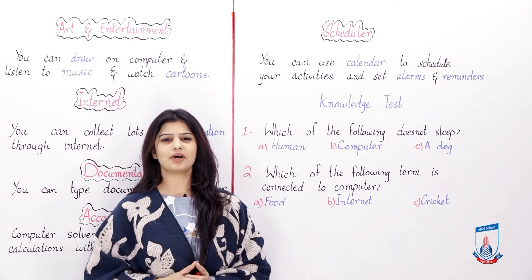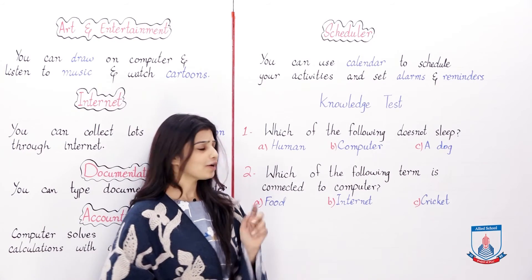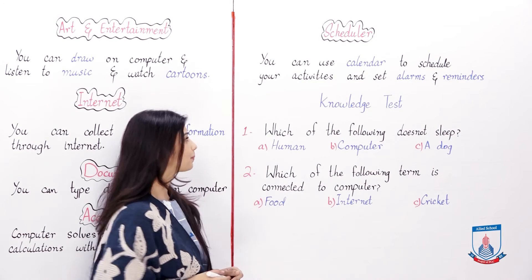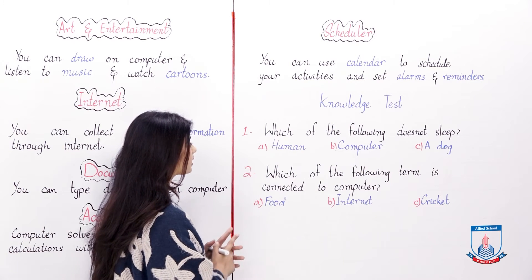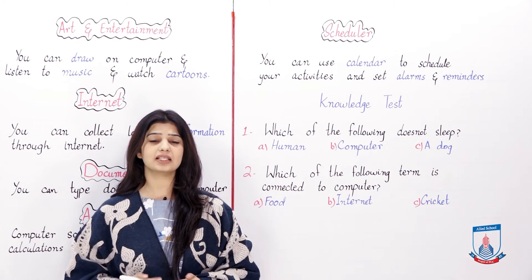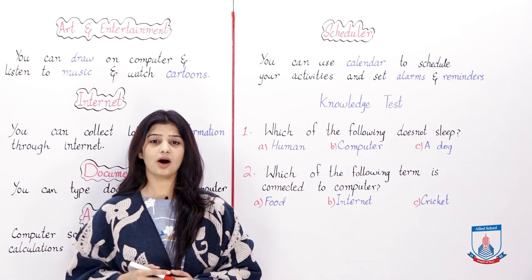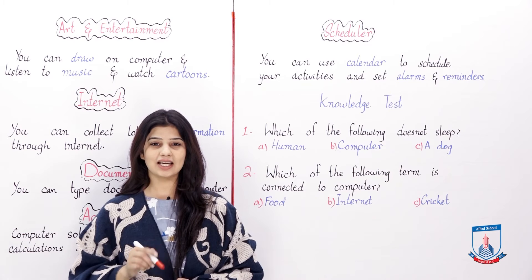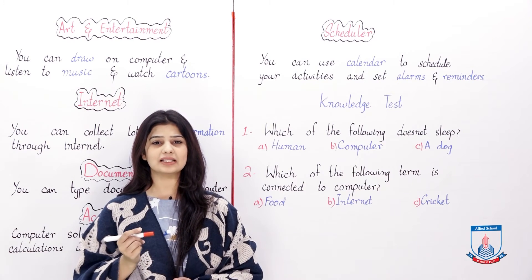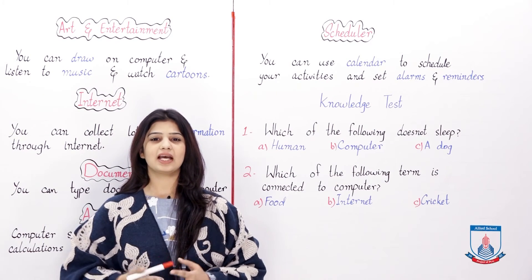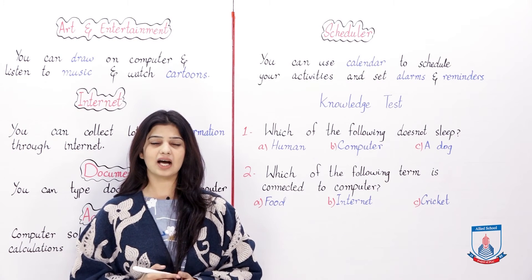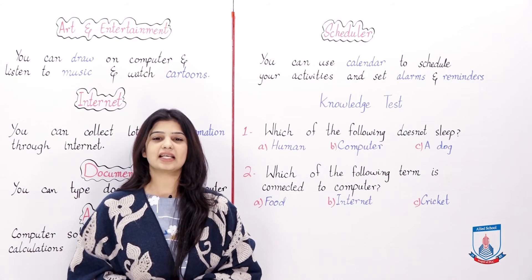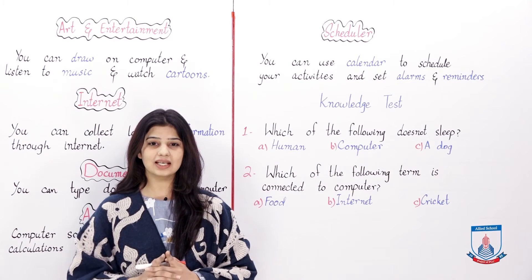Now let's see the last use of the computer as mentioned in our book — the scheduler. We can schedule our activities using the computer. You can use a calendar to schedule your activities and set alarms and reminders. A reminder tells you that you need to perform a certain activity — you give it a date and time, and the computer reminds you accurately on that exact day and time.